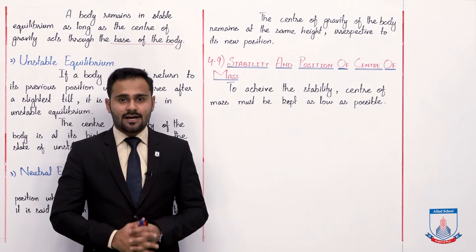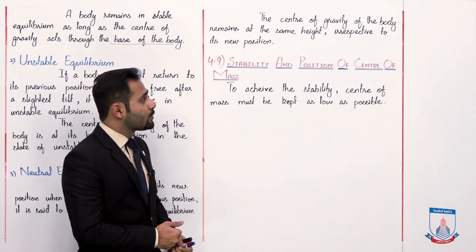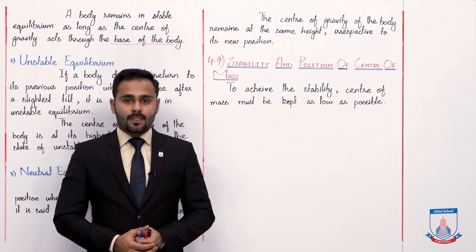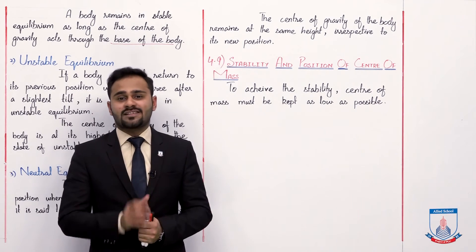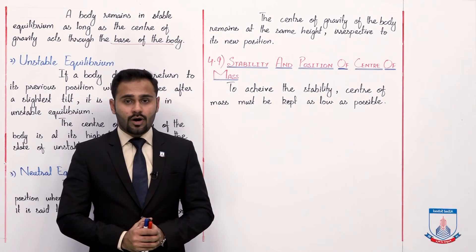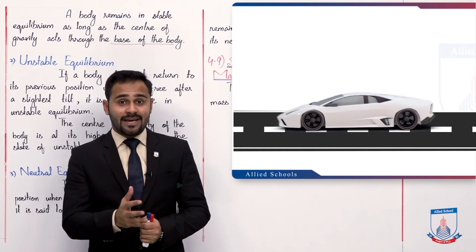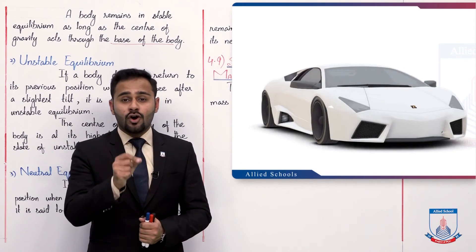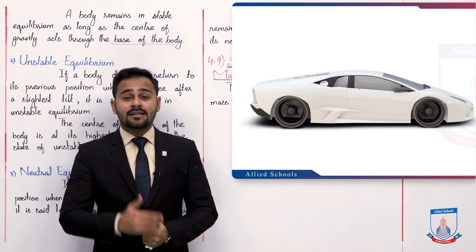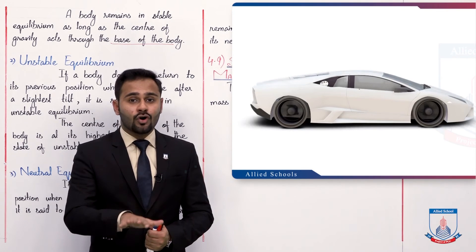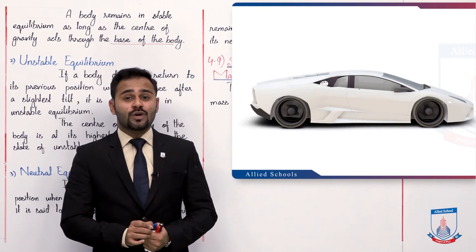So I hope these three states are now very clear. Now let's discuss the last topic: stability and position of center of mass. As discussed, the center of mass of any body is very important for achieving stability. Normally, you will have seen that racing cars have a very heavy bottom and a very wide base — just to lower their center of gravity — and their height is also very minimum, so that their center of gravity point stays low.